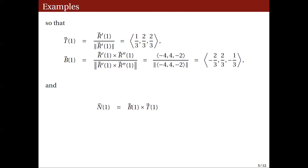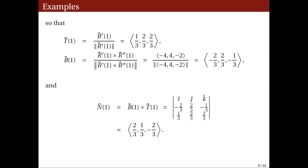Finally, the unit normal vector N(1) equals the cross product of B(1) with T(1). Computing this determinant using the same method, we get N(1) = (2/3, 1/3, −2/3). These three vectors — T(1), N(1), and B(1) — constitute the moving trihedral at t = 1.